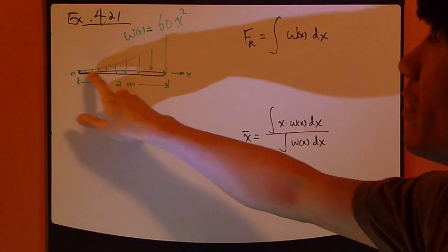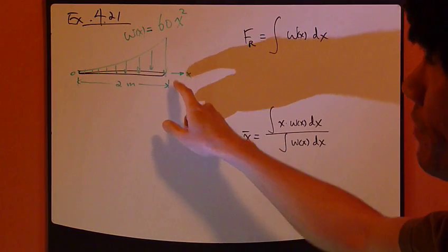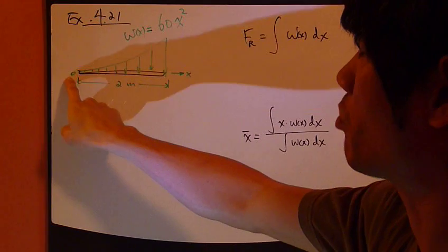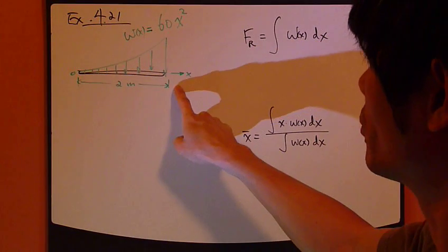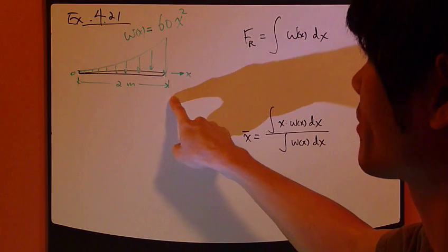So we have a rigid body, a simple bar measured from this point O to 2 meters in the x direction.